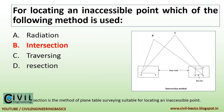For locating an inaccessible point, the intersection method is used to locate the inaccessible point on ground.